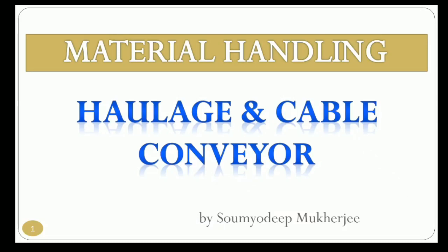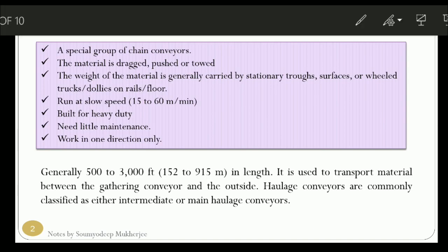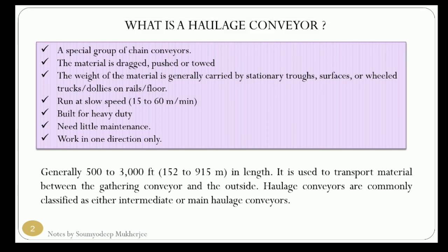Welcome to my channel. Today we are going to discuss haulage and cable conveyors. Previously we discussed different aspects of chain conveyors, belt conveyors, and different types of chain and belt conveyors. Now we are moving forward to another two types of conveyor: haulage conveyor and cable conveyor. Haulage conveyor is basically a special group of chain conveyor where the material is dragged, pushed, or towed by means of a chain.